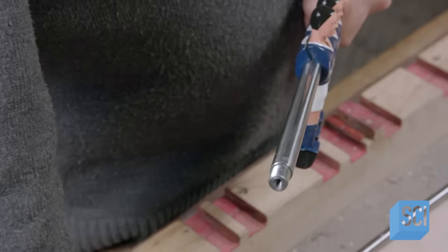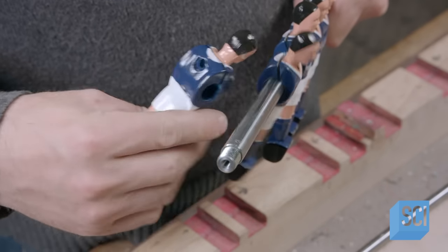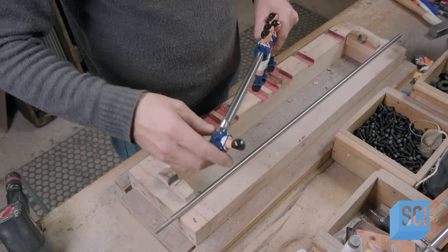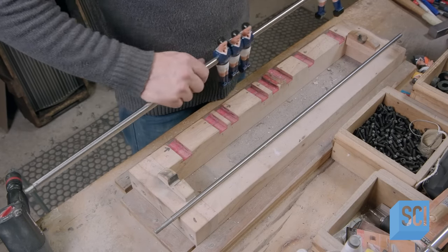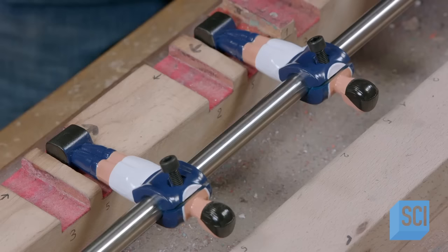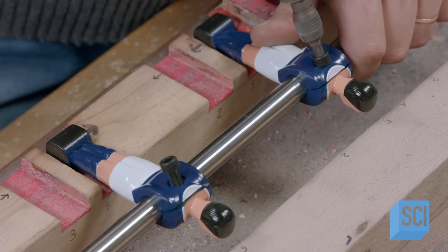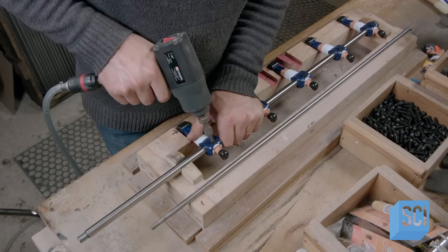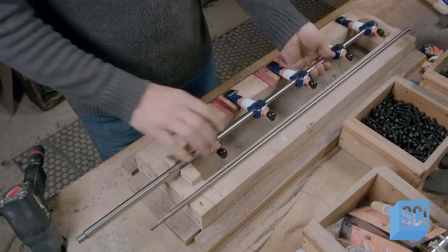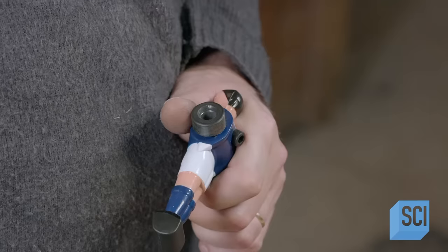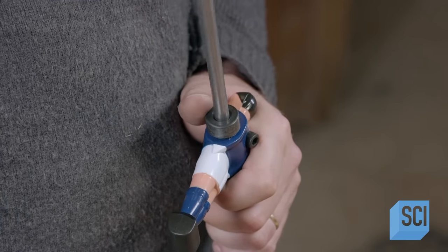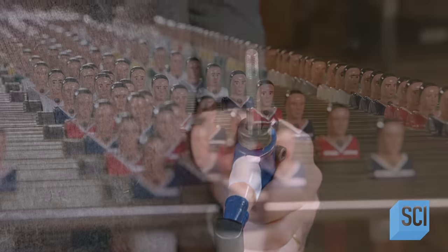A worker mounts the players for each line onto a hollow stainless steel rod. Using a template to space them correctly, he bolts each player to the rod. Then attaches a rubber bumper to the players at each end, to prevent them from slamming against the side walls. He inserts a narrower stainless steel rod into the hollow bar to make it telescopic.